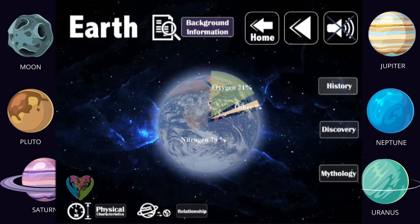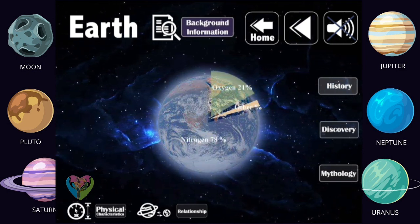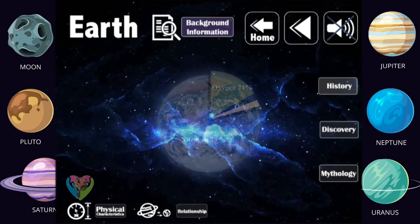The Earth's atmosphere consists of 78% nitrogen and 21% oxygen.